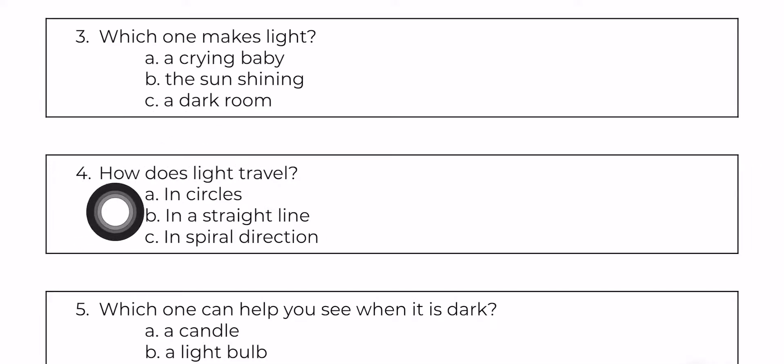Four, how does light travel? A. In circles. B. In a straight line. C. In spiral direction.